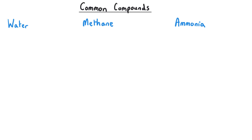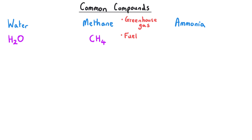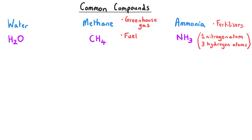There are some compounds you will become more familiar with whose names don't follow these rules. For instance, water has the chemical formula H2O — you wouldn't be able to work that out from the name, you just need to remember it. Methane is a greenhouse gas and fuel used in Bunsen burners, and has the formula CH4 — again, you wouldn't know from the name that there is one carbon and four hydrogens. Ammonia has the chemical formula NH3, one nitrogen and three hydrogen atoms, and is used to make things such as fertilisers.